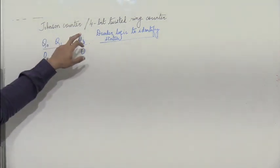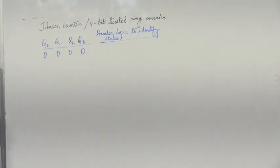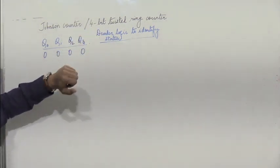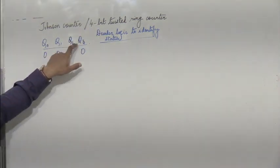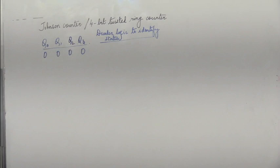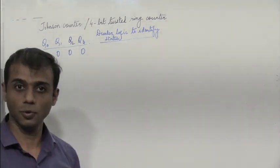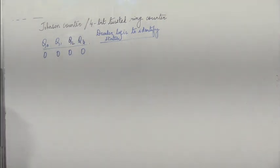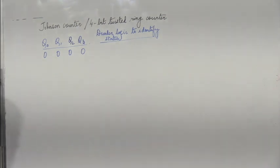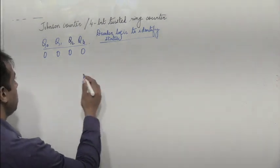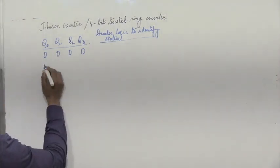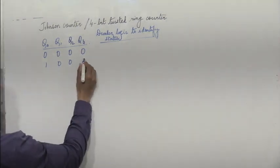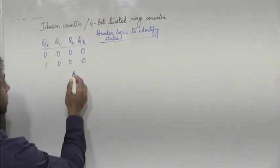Now what is a Johnson counter? Since we have 4 bits, we have q0, q1, q2 and q3, the outputs of the 4 flip-flops. Initially they are all 0. Now what about the next state? The next state is 1, 0, 0, 0.